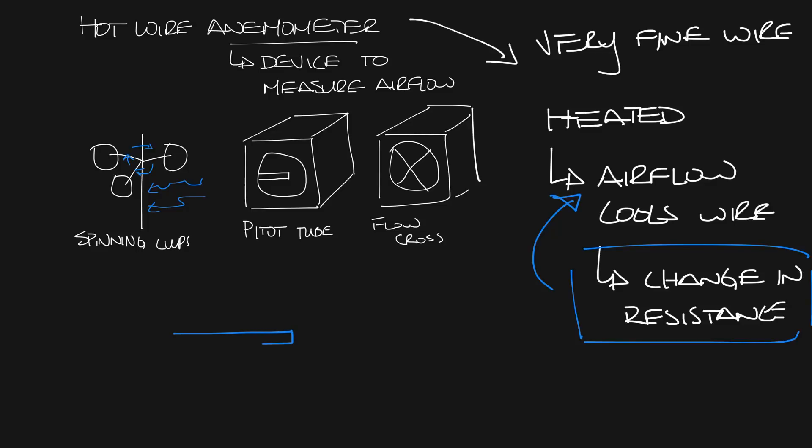A hot wire anemometer looks something like this. It's usually on the end of a long probe or stick so that you can put in the air stream. Then there'll be a little piece to protect the wire around the outside, and you'll see the wire on the inside. You'll put it so that the air flows through the opening and over the wire.